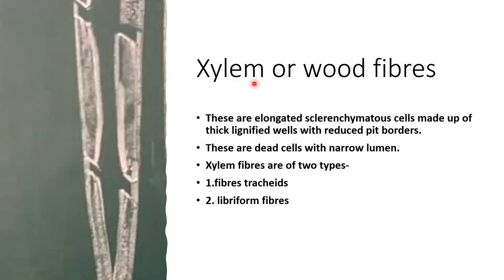The fourth kind of cells are xylem fibers or wood fibers. They are tapered and narrow with a very narrow lumen, and have a thickened wall. They are dead cells — without any protoplast or nucleus — and they provide mechanical strength and support to the xylem tracheids and vessels. These fibers are made up of thick-walled sclerenchyma cells and are categorized into two categories: fiber tracheids and libriform fibers.